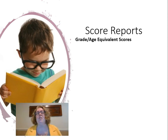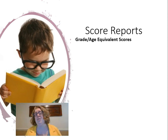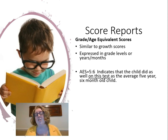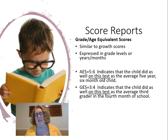Then we have age and grade equivalent scores. Unfortunately these are reported a lot to parents, but they're very difficult to interpret — I think these are the bane of my existence. An age equivalent score of 5-6 indicates the child did as well on this test as the average five-year, six-month-old child. Grade equivalents are interpreted the same way — a grade equivalent score of 3.4 means they did as well as the average third grader in their fourth month of school, so if they were a fourth grader, that child was below grade level.